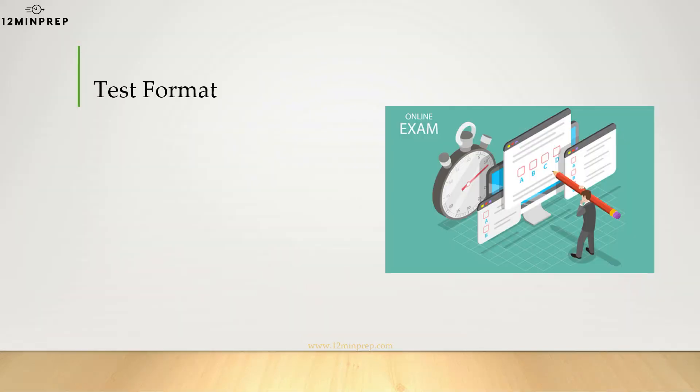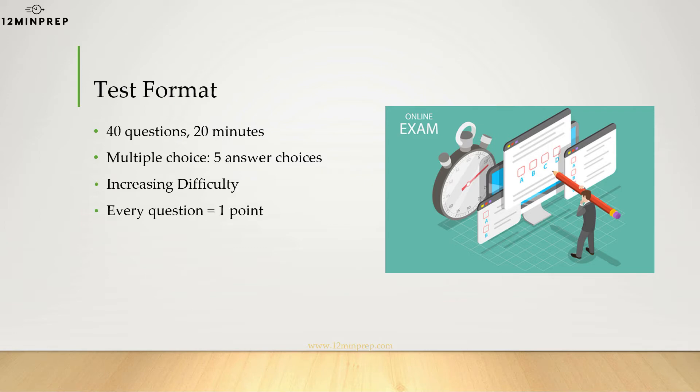The UCAT contains 40 questions and takes 20 minutes to complete. Each question is multiple choice and has five answer choices with one correct answer. The test's questions become increasingly difficult as you progress through the test. Each question is worth one point, and you do not lose points for answering questions incorrectly. You are not allowed to use a calculator on the test, but you may bring scratch paper for calculations.